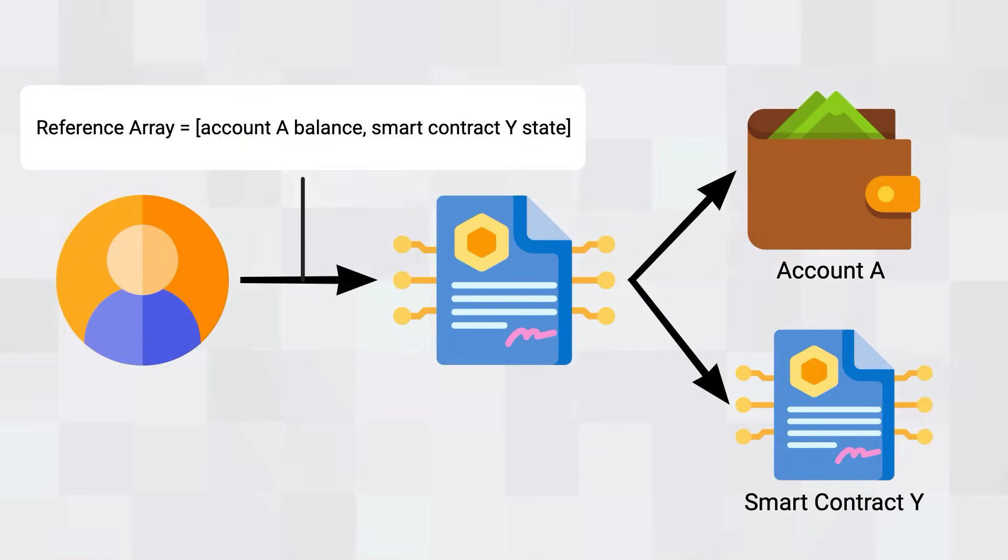Algorand, on the other hand, is designed to prioritize high TPS and low latency. So to prevent blockchain state queries, which can be slow and expensive, from slowing down the network, the AVM restricts the amount of resources smart contracts can query per transaction. For example, if your Algorand smart contract needs to access an account balance or a smart contract state, the smart contract call transaction must include references to these resources in the reference array. This allows nodes to prefetch the reference resources for the smart contract to use during execution.